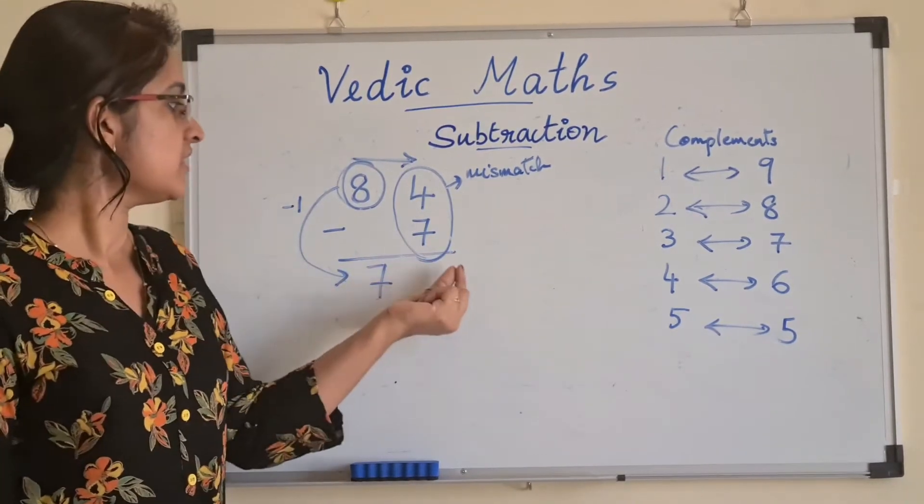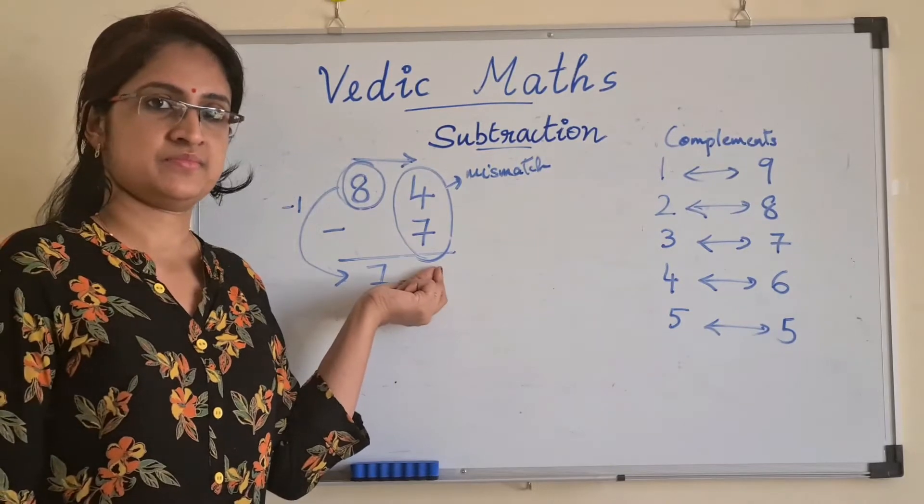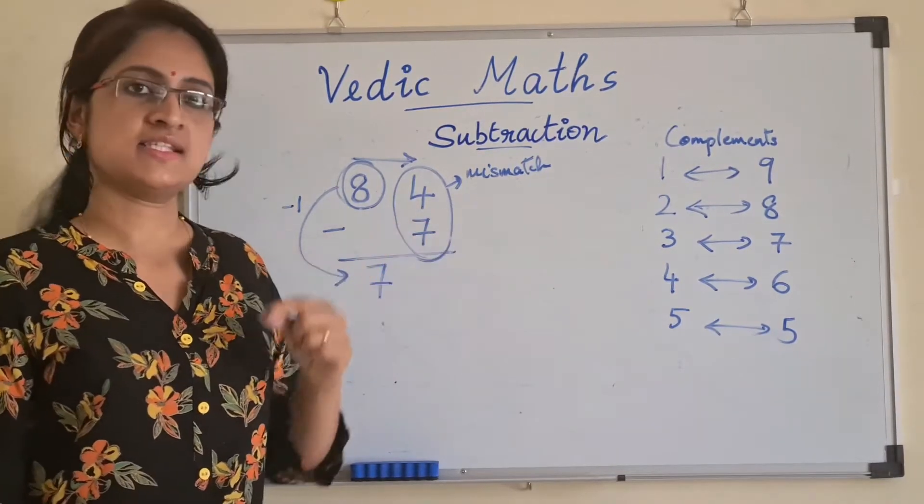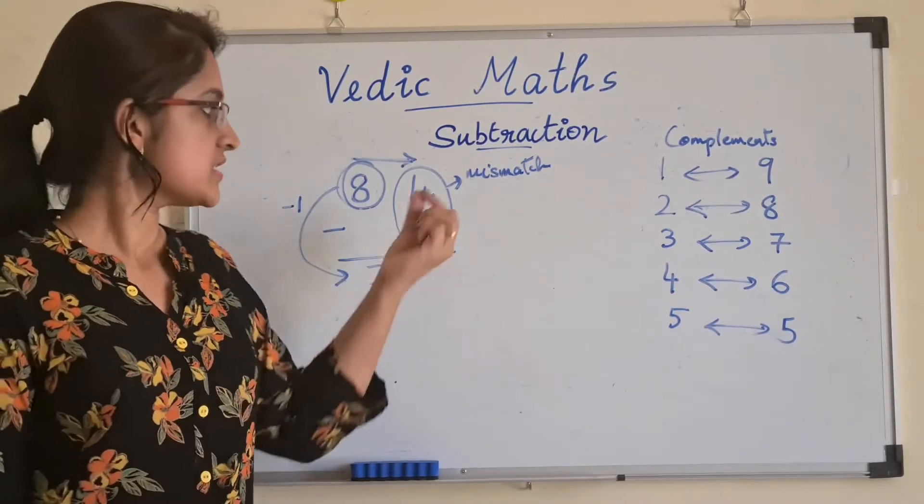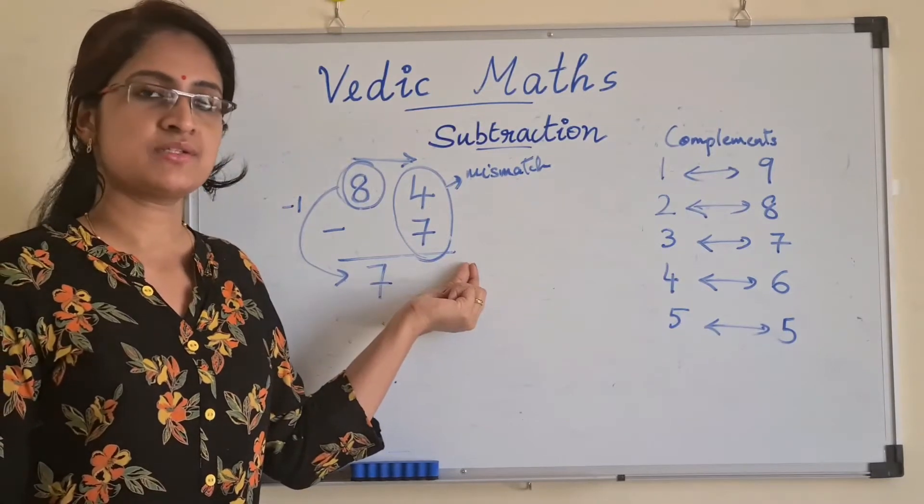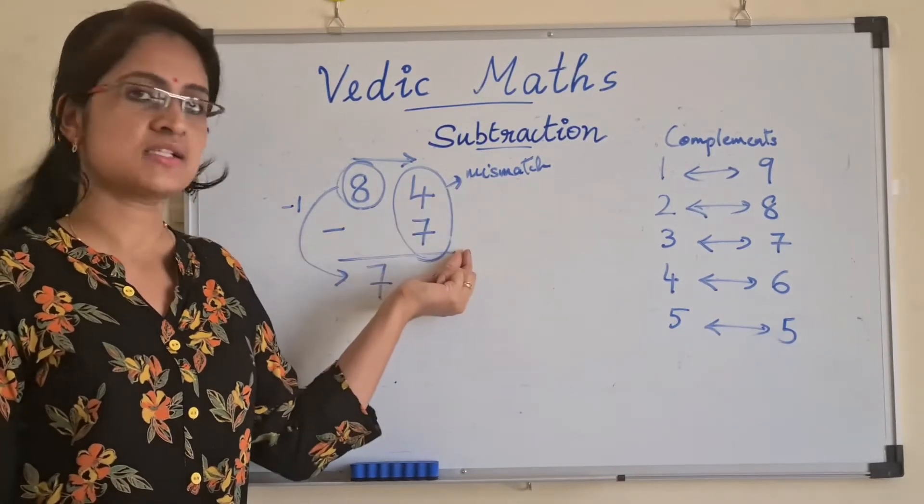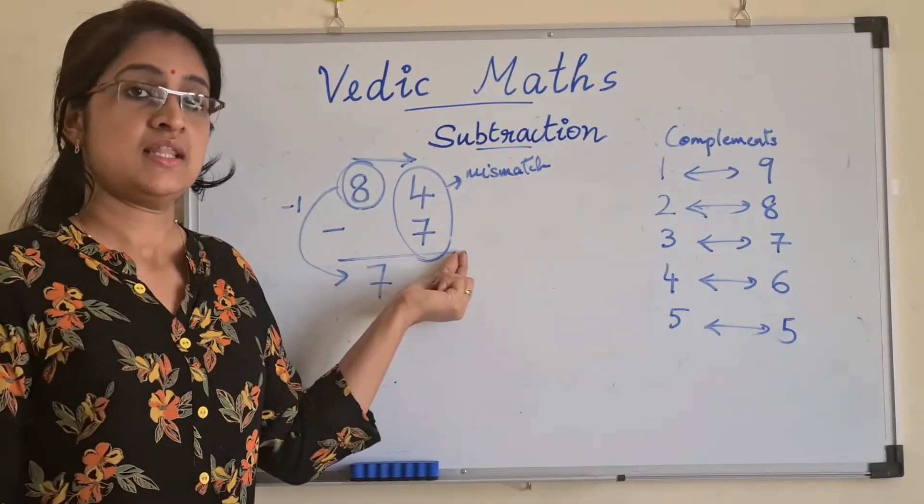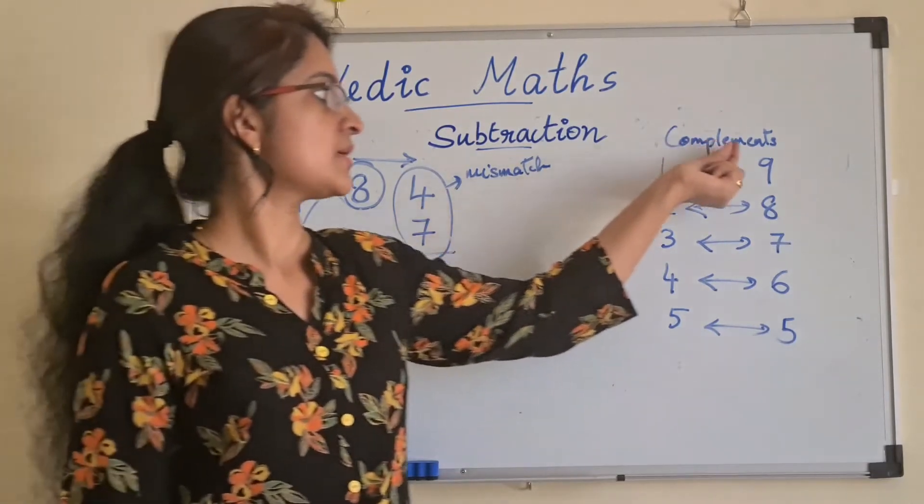Now, moving to the next pair, which is 4 minus 7. Since 4 minus 7 is a mismatch combination, you cannot subtract directly. Then, we use the concept of complements,